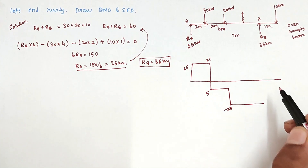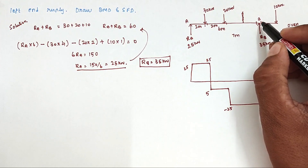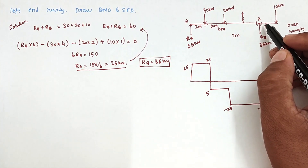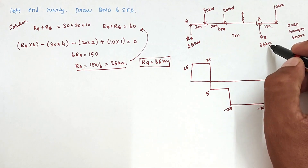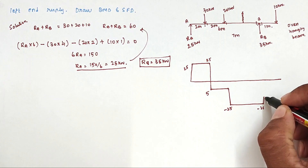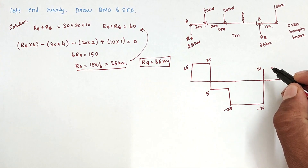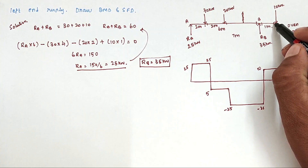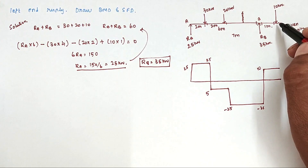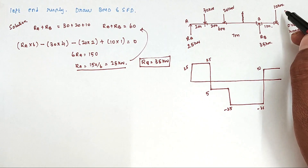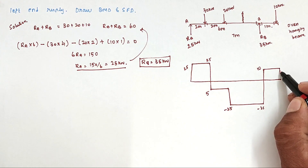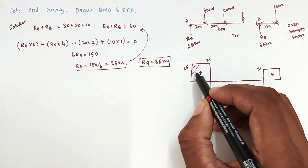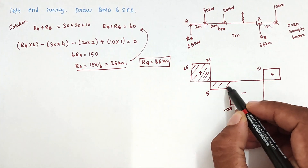The shear force remains at −25 kN up to support B. At B, on the right side we have a clockwise upward force of +35 kN, so −25 + 35 = +10 kN. This value is maintained up to the right end, where the anticlockwise load of 10 kN brings it back to 0: +10 − 10 = 0. The shear force diagram shows positive zones and one negative zone.